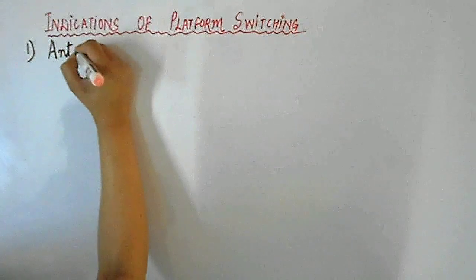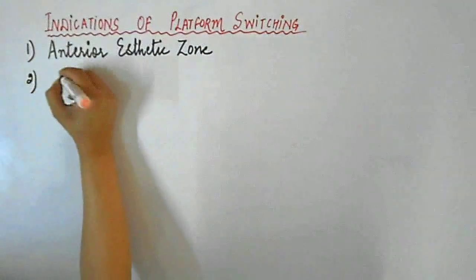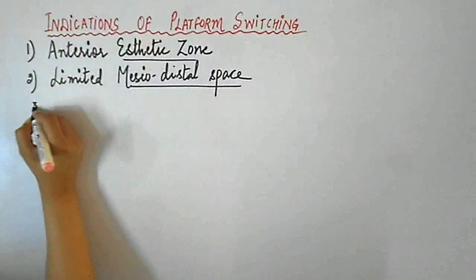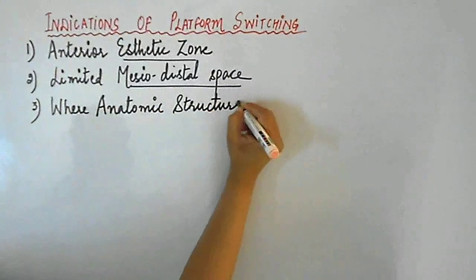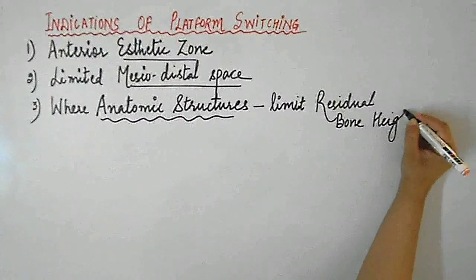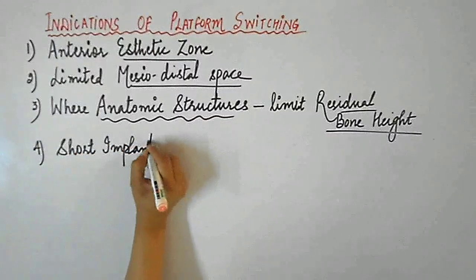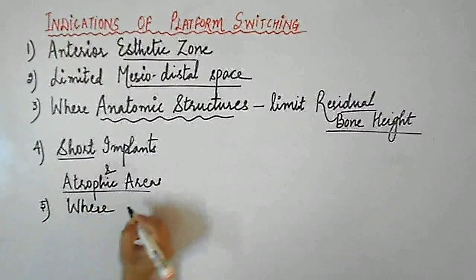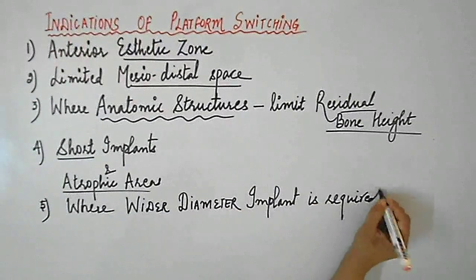To conclude, the clear indications of platform switching are: the anterior aesthetic zone; limited mesiodistal space; anatomic structures like the sinus cavity, nasal floor, incisive canal, or alveolar nerve that limit residual bone height; cases where short implants are to be used or in atrophic areas; and where a wider diameter implant is required but prosthetic space is limited.